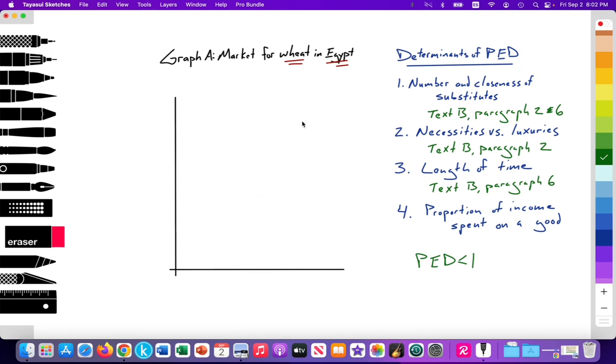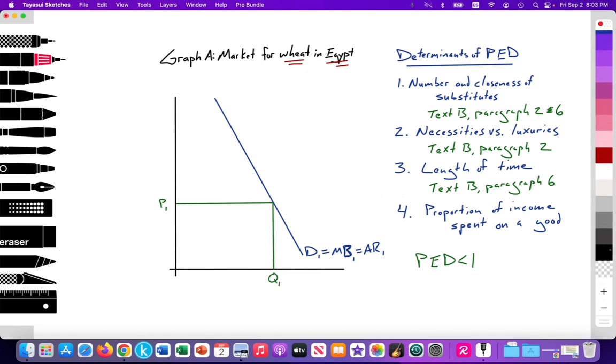So the market demand for wheat would have a relatively inelastic curve, relatively vertical. So I'm going to exaggerate this. Here we're going to have this very vertical curve. I'm going to label this D1, and it's equal to my marginal benefit curve. And for higher-level students, they also know that's equal to your average revenue, just for some review.